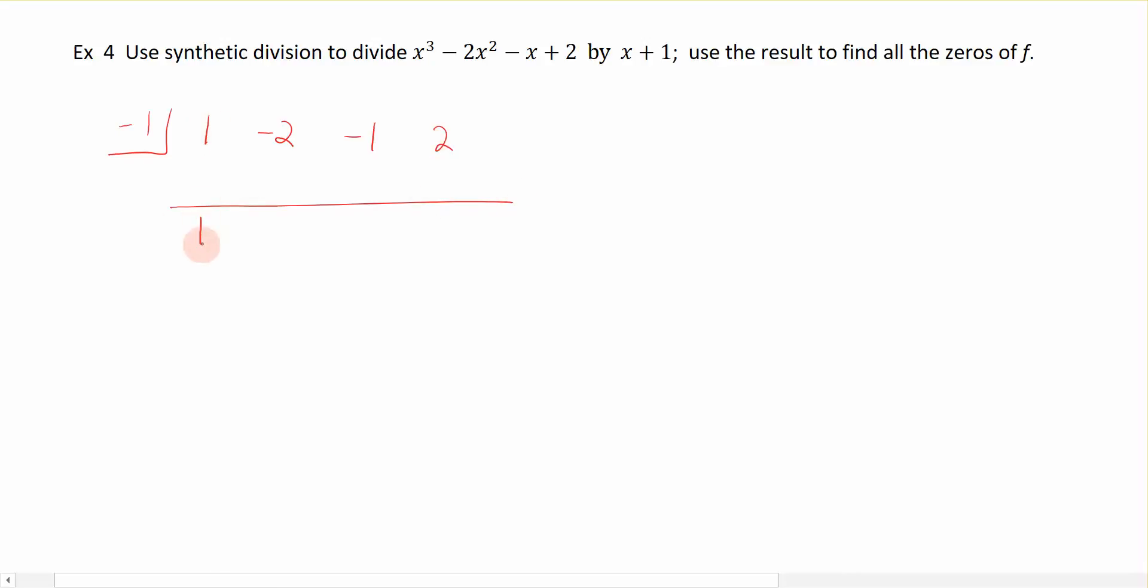And remember, when we do synthetic division, we start by bringing the 1 down. So negative 1 times 1 is a negative 1. Add straight down, I get negative 3. Negative 1 times a negative 3 is a positive 3. Add straight down, I get 2.